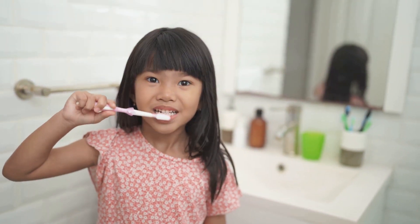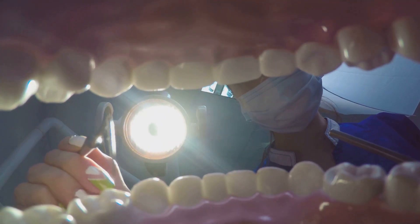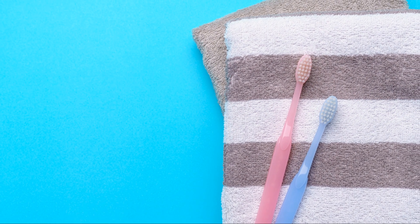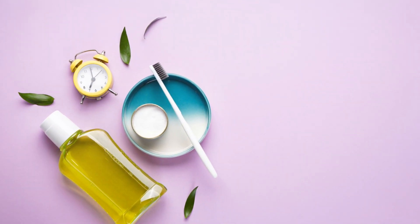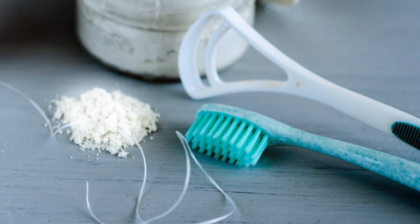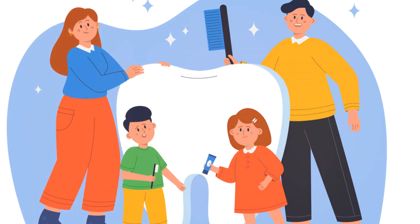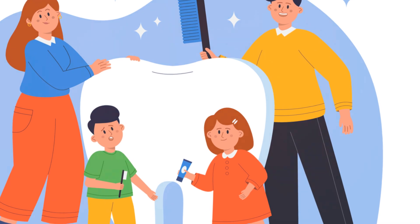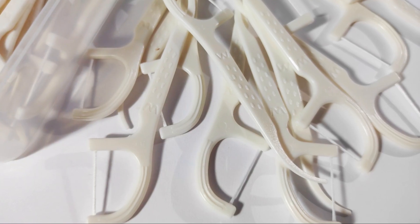Cost-effective solutions include using fluoride toothpaste and mouthwash, which strengthen the teeth and help prevent cavities. Seeking timely dental care can prevent expensive treatments later on. In conclusion, an abscessed tooth is a serious condition. Recognizing the causes and symptoms helps in early detection, and combining medical treatments with home remedies can provide relief. Maintaining good oral hygiene is key to prevention. Stay healthy and safe.